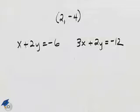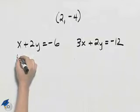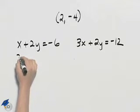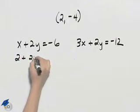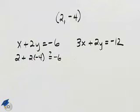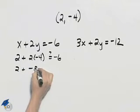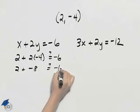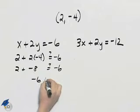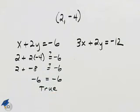To determine if the point two, negative four satisfies the system, we will substitute two and negative four in for x and y. So we have two plus two times negative four. We want to see if that is equal to negative six. Evaluating, two plus negative eight is negative six, so we obtain negative six equal to negative six, which is a true statement.